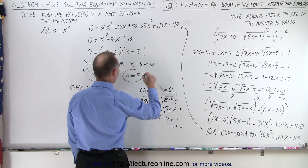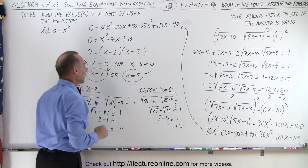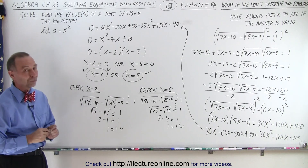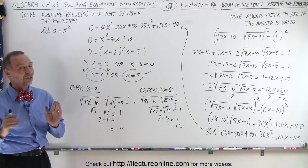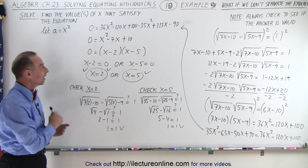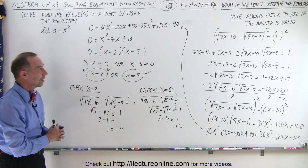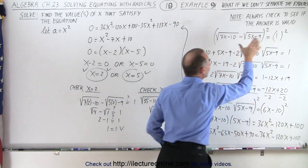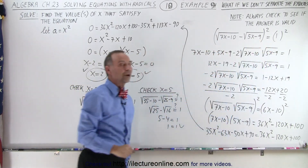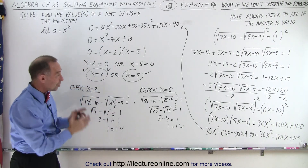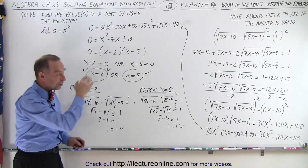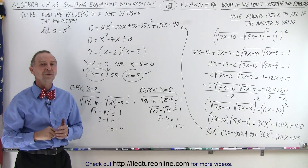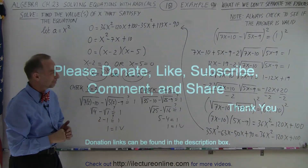Both x equals 2 and x equals 5 are indeed the solutions, but notice it took a whole lot more work to reach the same answer. I would definitely recommend moving one of the radicals to the other side before you square both sides — you can still get the answer this way, but it's a lot more work. And that is how it's done.